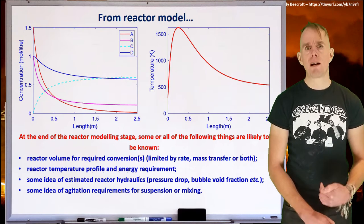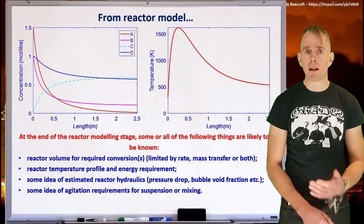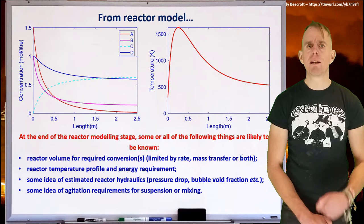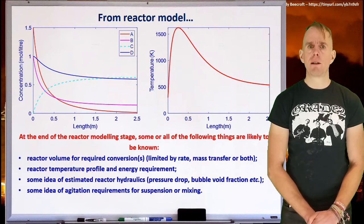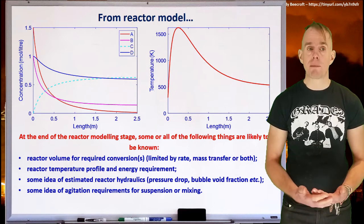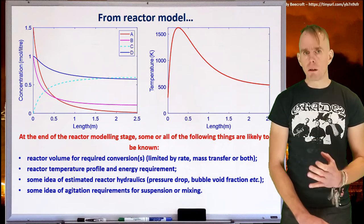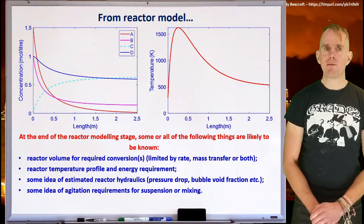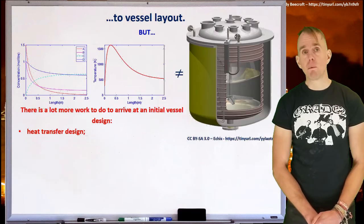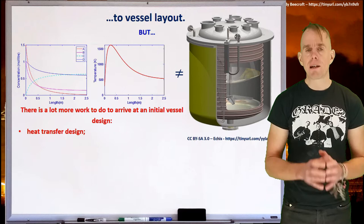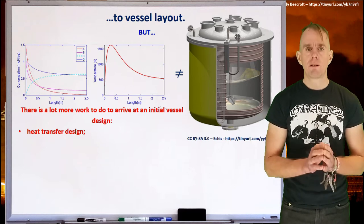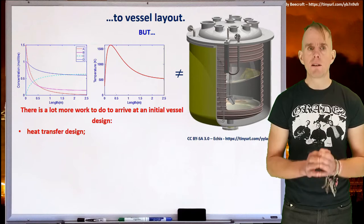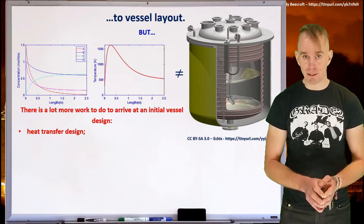If, for example, you have a solid-liquid or a solid-liquid gas system, then we know that we don't want the solids to settle out, and that there is a minimum suspension criterion that we need to achieve in order to prevent that from happening. So our reactor model will give us a great deal of information. However, never assume that your job is done once you have your reactor model, because as a chemical engineer you are not delivering some nice modelling data, you are delivering a design for a vessel that has to be built.